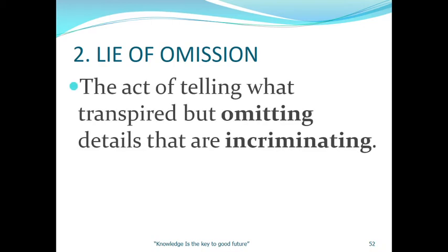Number two is the lie of omission: the act of telling what transpired but omitting details that are incriminating. You acknowledge that something happened, but you remove or hide the self-incriminating details — like not wanting to reveal certain facts because they are incriminating. The theft or event did happen, but the details are being concealed.